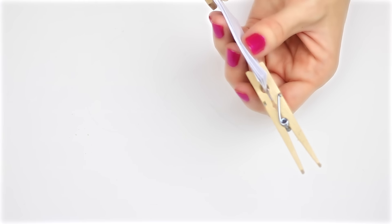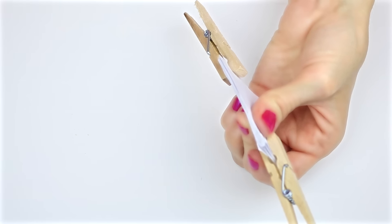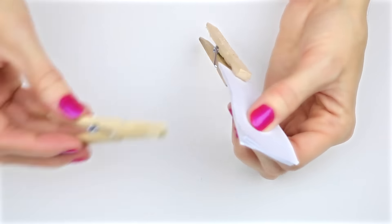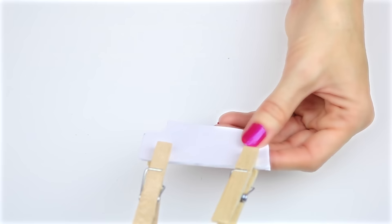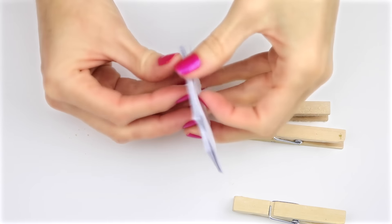I'm going to use clothespins to hold it in place and with some Elmer's glue, I painted on a thick layer of glue on the top to hold the notebook together. Once the glue has dried, remove the clothespins and your notebook will be held together.